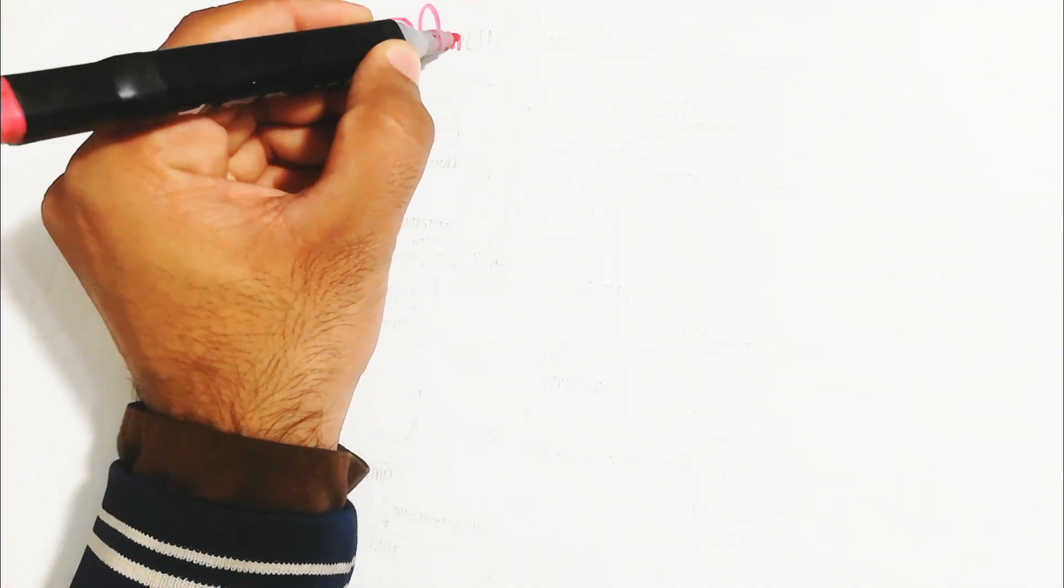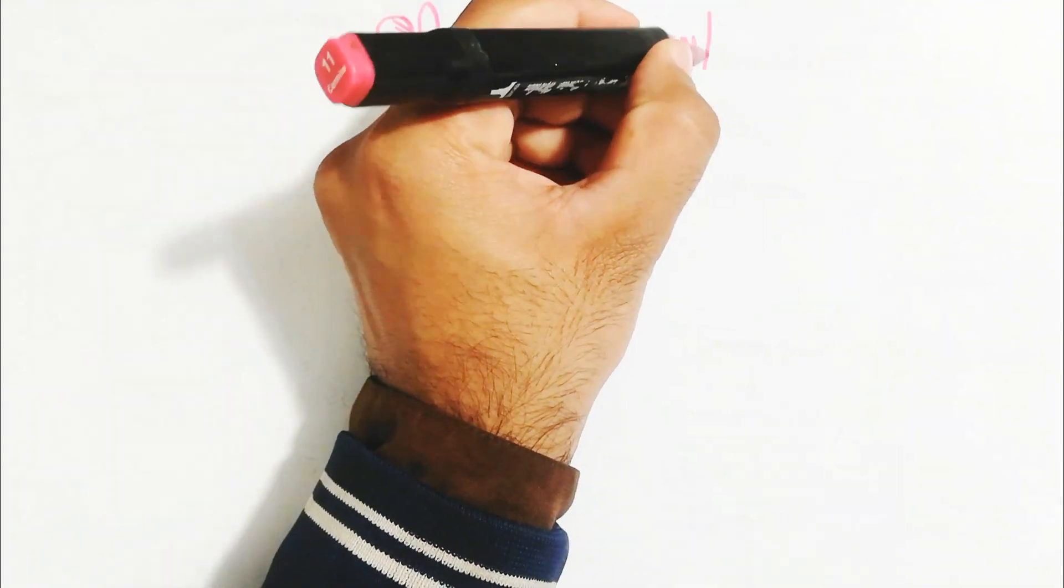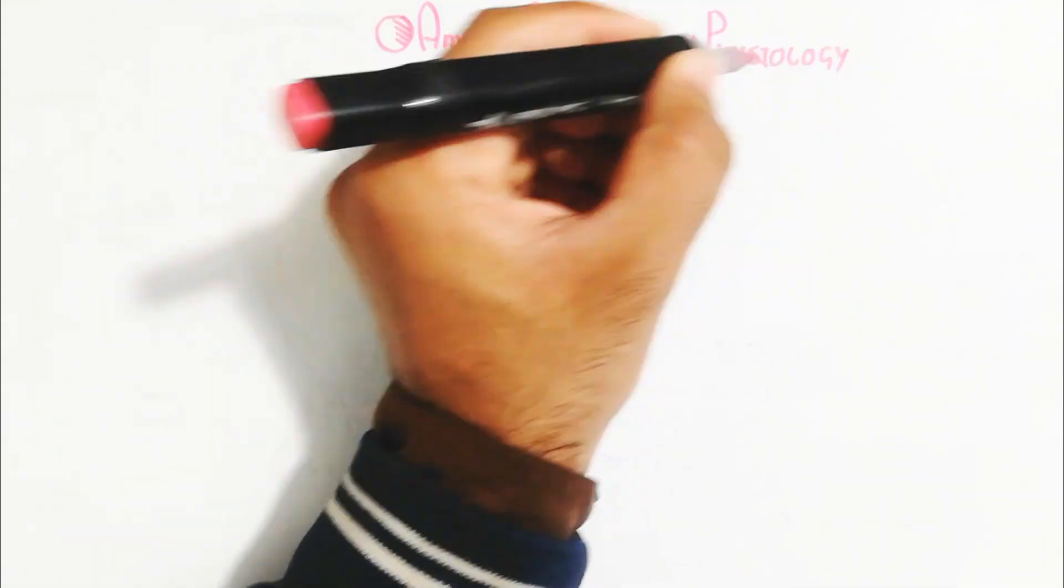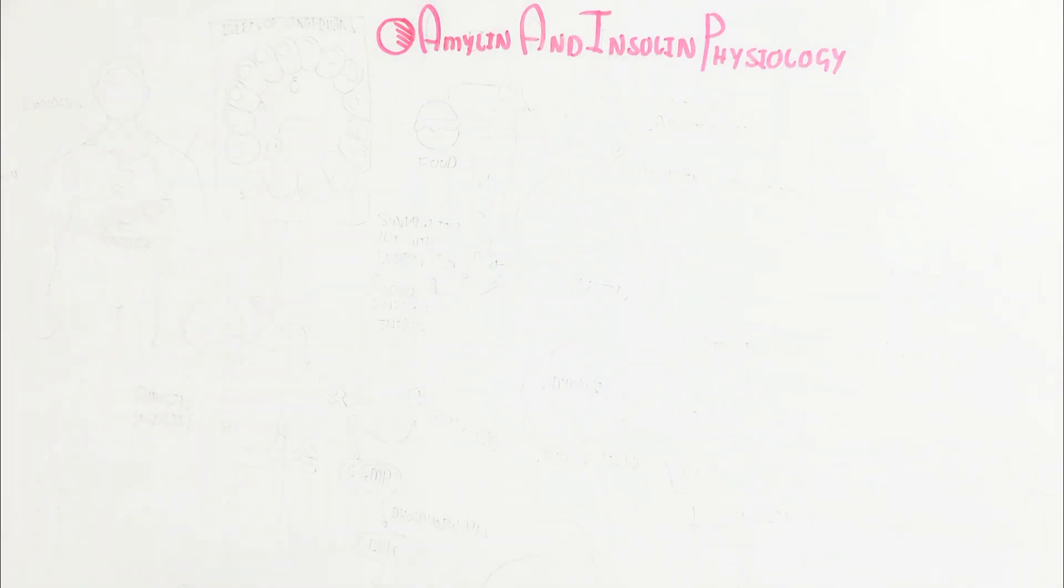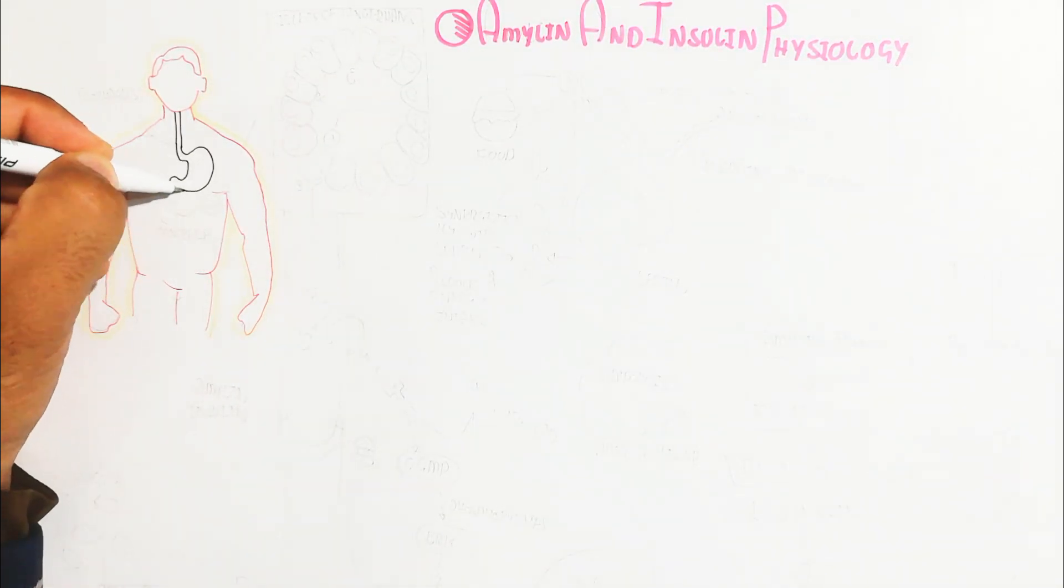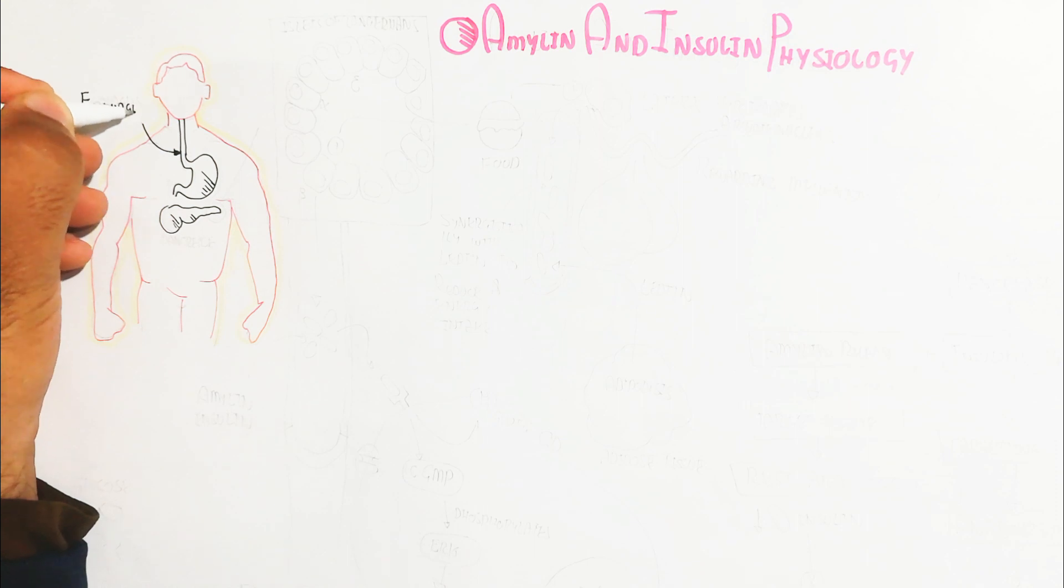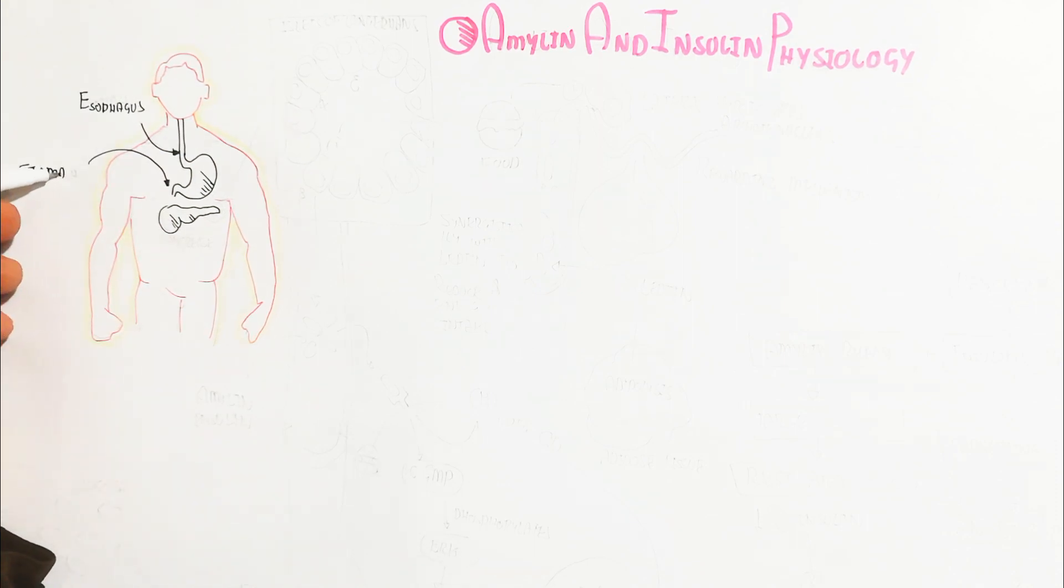Hello, in this video we will understand amylin and insulin physiology, but we will focus on amylin because everybody knows about insulin. Let's begin to understand from the digestive system. When a person eats food, the food will be digested and absorbed into the blood circulatory system.